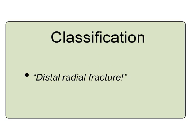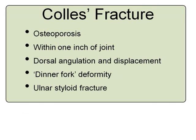So this is a much overused term in the orthopaedic experience. Classically, Colles described this before x-rays were invented, so it was very much a clinical diagnosis. He talks about a fracture that occurs in osteoporotic bone within one inch of the joint with dorsal angulation and displacement, giving the classic dinner fork deformity and also associated with an ulnar styloid fracture. So that's the classic Colles' fracture, which we do see frequently, particularly in older patients.